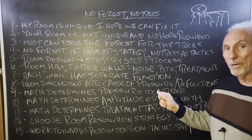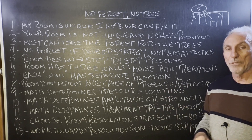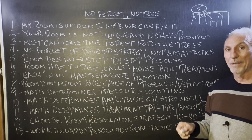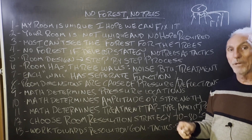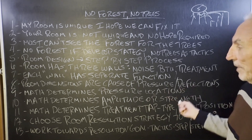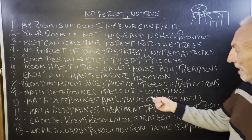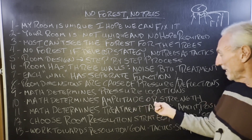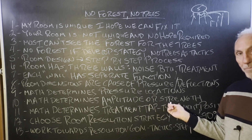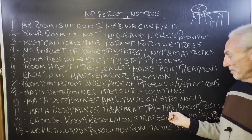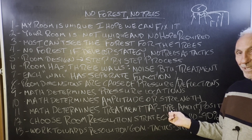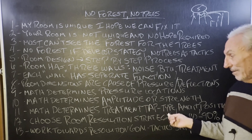The dimensions of a room are the cause — the sole cause — of pressure and reflections. It's math, it's physics, and the pressure and reflections are produced by the room dimensions. Math determines the pressure locations. Math determines the amplitude or strength of that problem. Math determines the treatment type, amount, and position. It's all mathematically calculated. It's not hard, and we don't need hope. We have math.